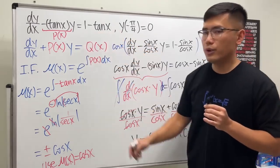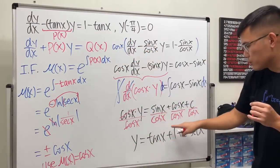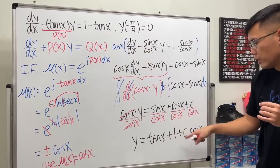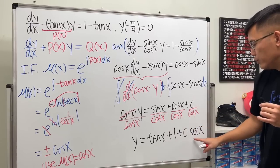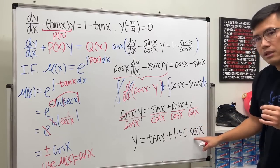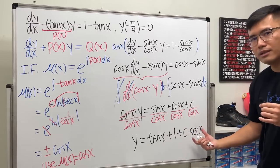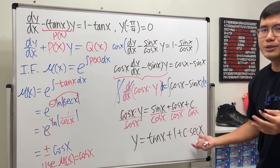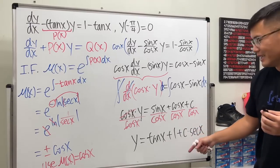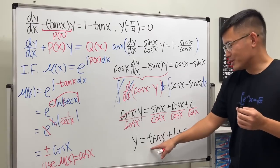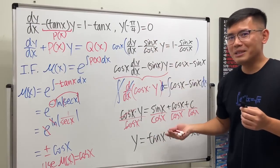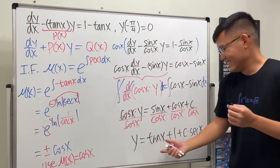Now divide everybody by cosine x to get y by itself. The general solution is y equals tangent x plus 1 plus C times secant x.